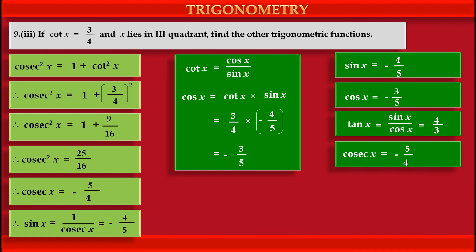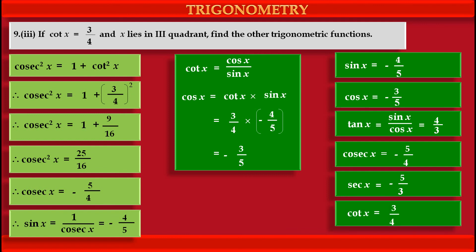We already found cosec x = −5/4. Now, sec x is the reciprocal of cos x, and since cos x = −3/5, sec x = −5/3. The value of cot x was already given as 3/4. In this way, we have found all the trigonometric function values using the given value of cot x = 3/4.